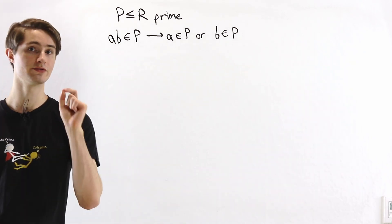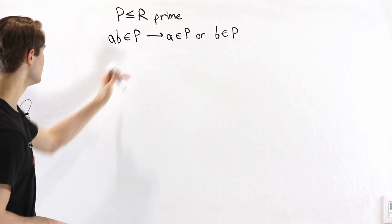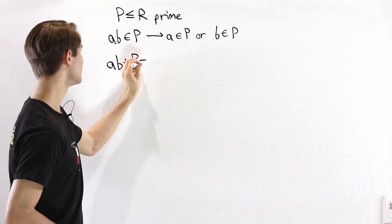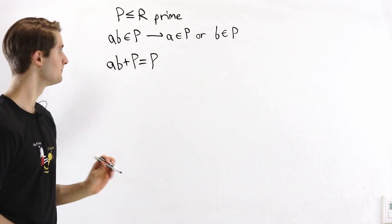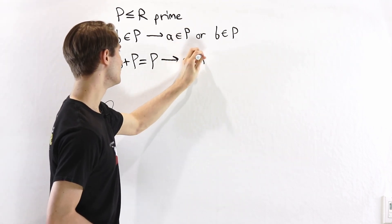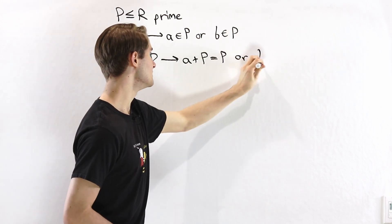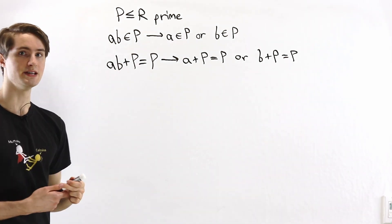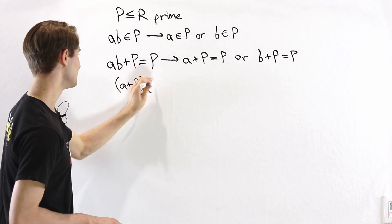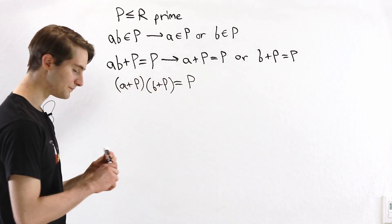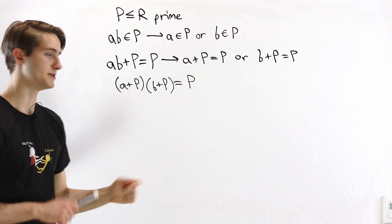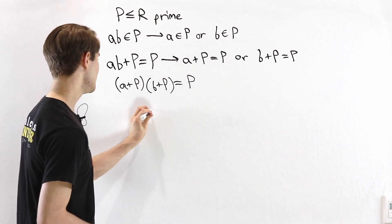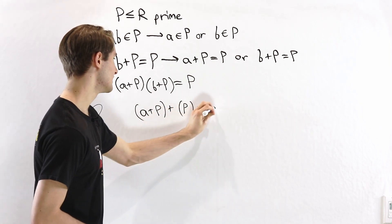Now let's think about what these statements mean in the context of the quotient ring R mod p. In the quotient ring, the element ab becomes the coset ab + p. We know that ab is in p if and only if ab + p equals p. Similarly, a is in p if and only if a + p equals p, and likewise for b. We can write ab + p in the quotient ring as (a + p)(b + p).